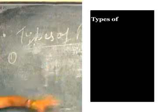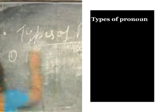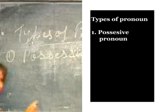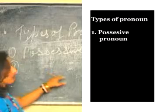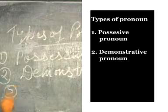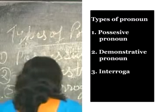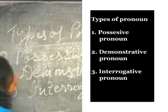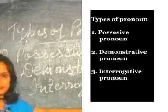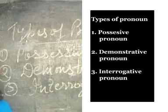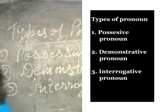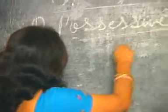Now let's discuss the types of pronoun. There are three types: the first is possessive pronoun, also called personal pronoun; the second type is demonstrative pronoun; and the third is interrogative pronoun.